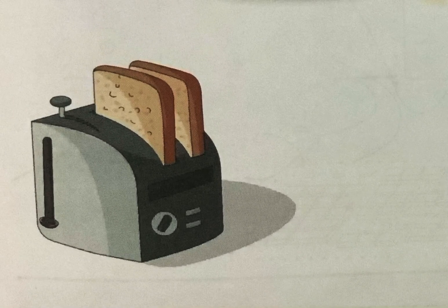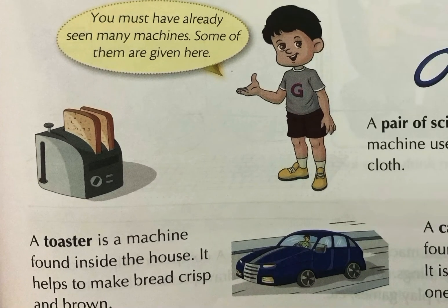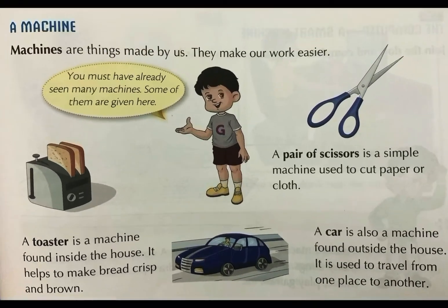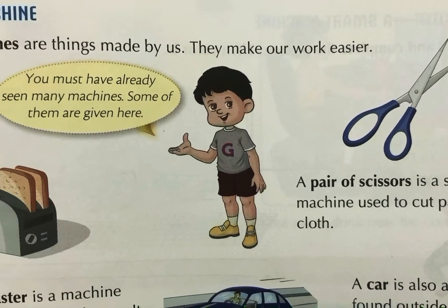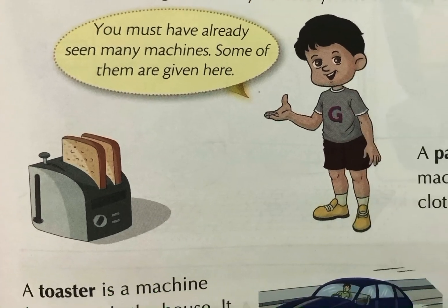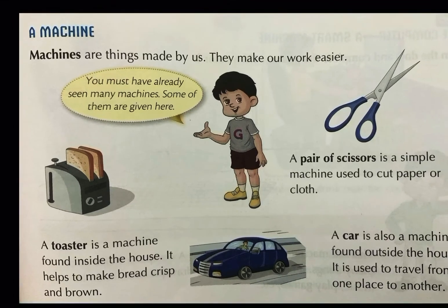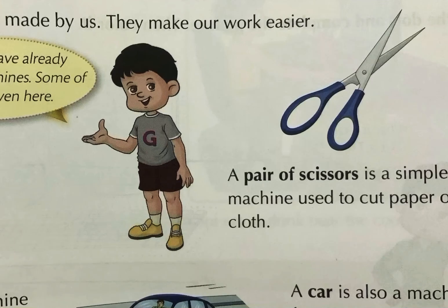Aap dekh rahe hain? Yahaan bhi bread ka color kya hai? It is brown. Aur janatay hain in a toaster, bread becomes crisp and brown. So, it is a machine that is found inside the house. A pair of scissors and a toaster — yeh ghar ke andar hote hain. We keep toaster and a pair of scissors inside our home.